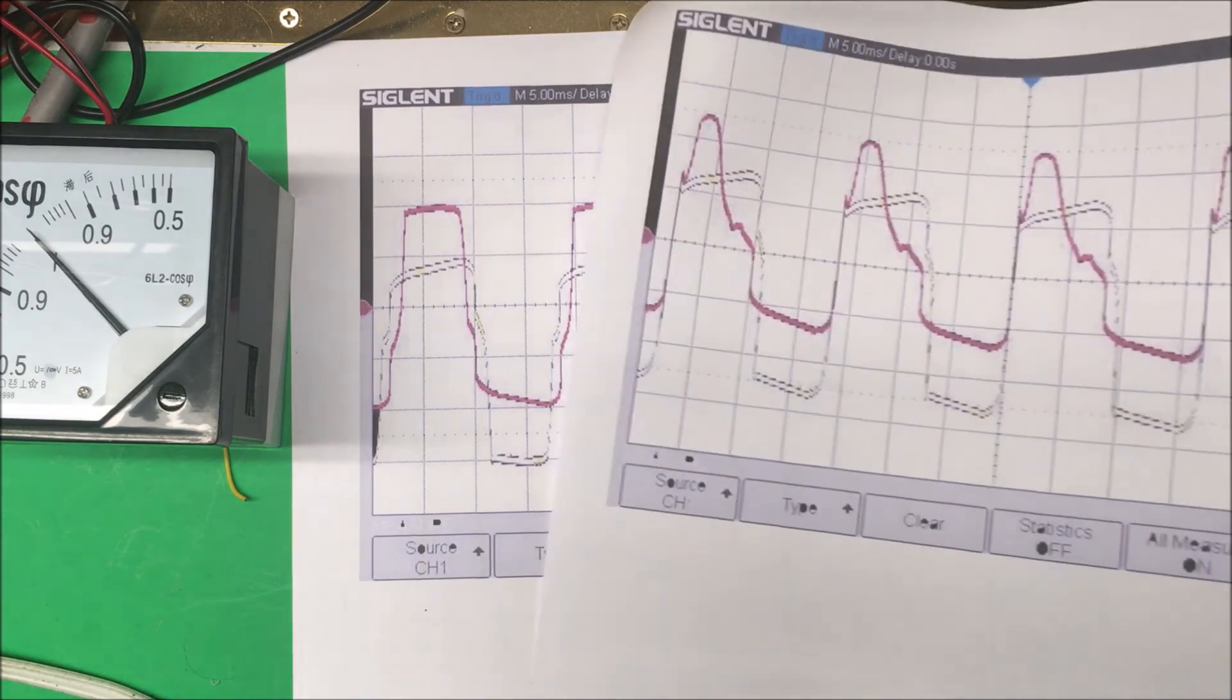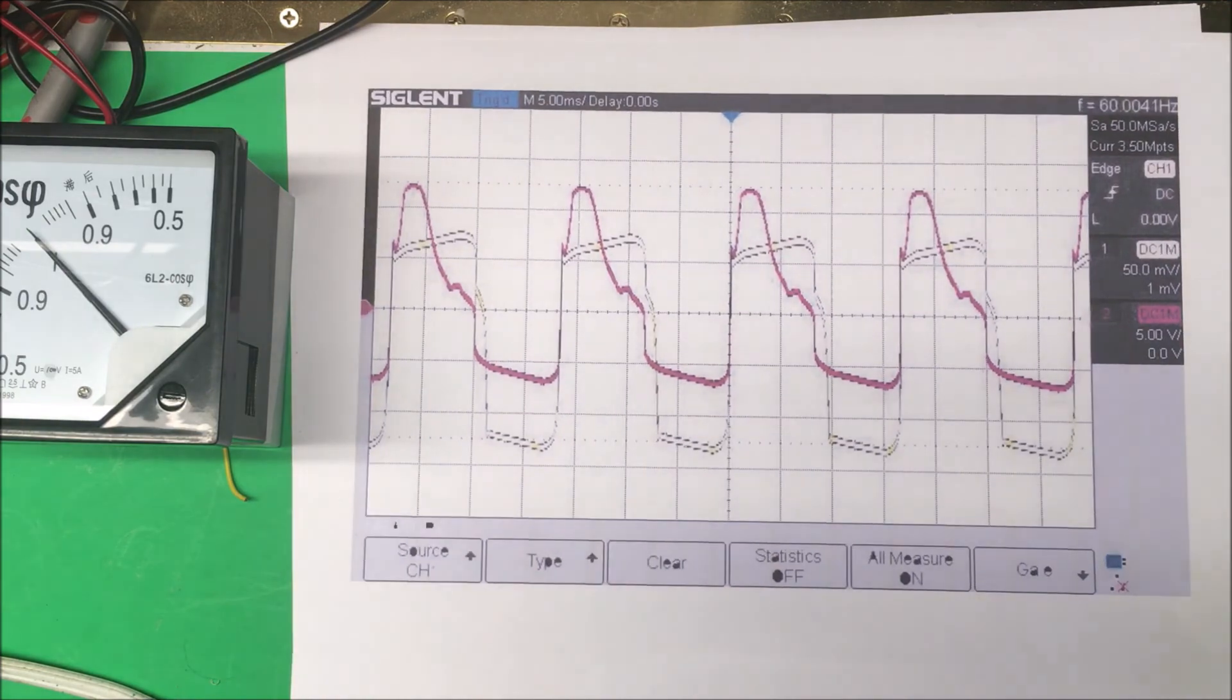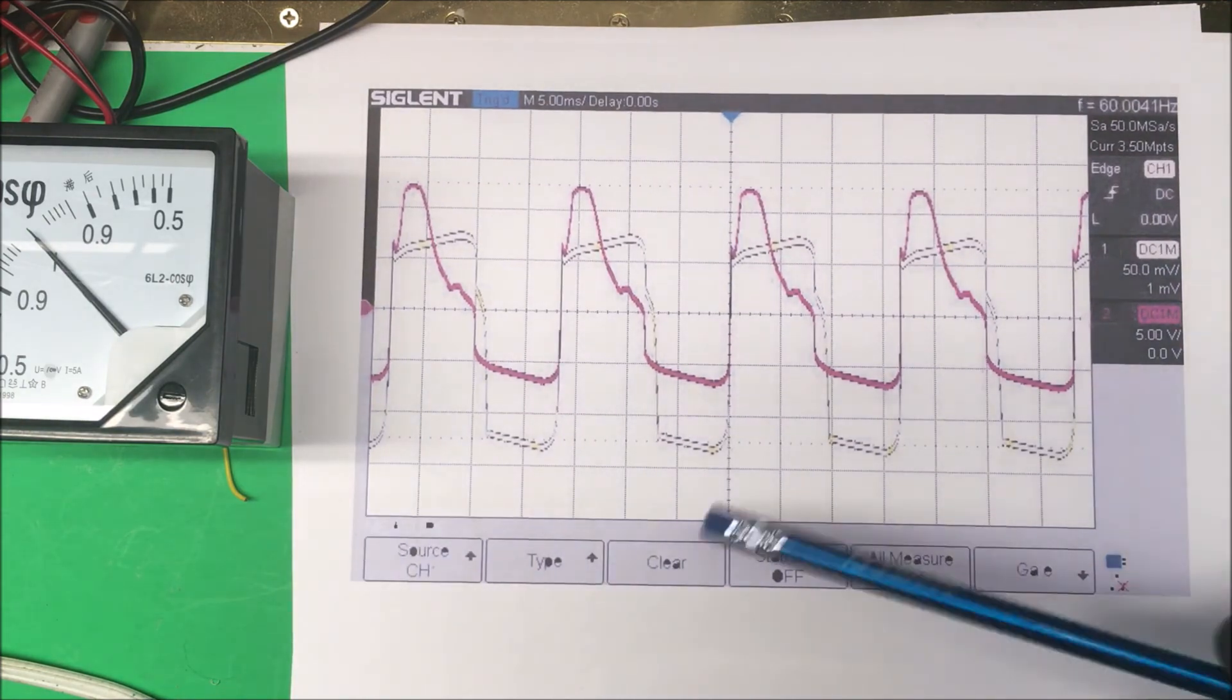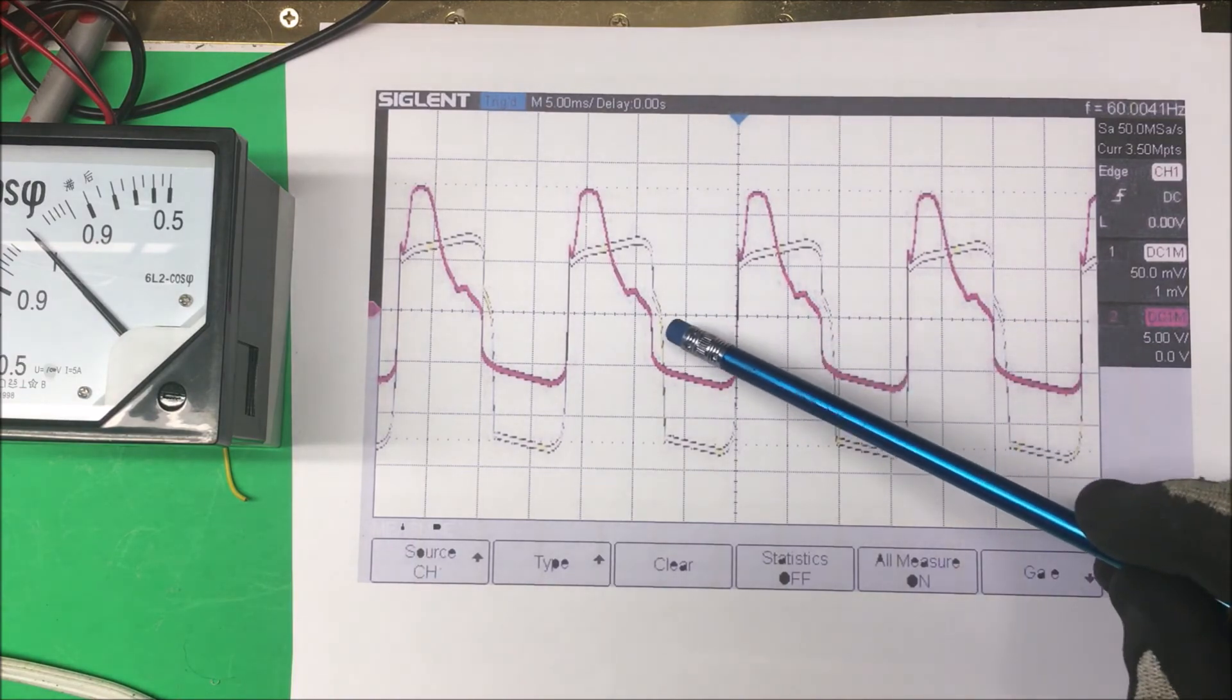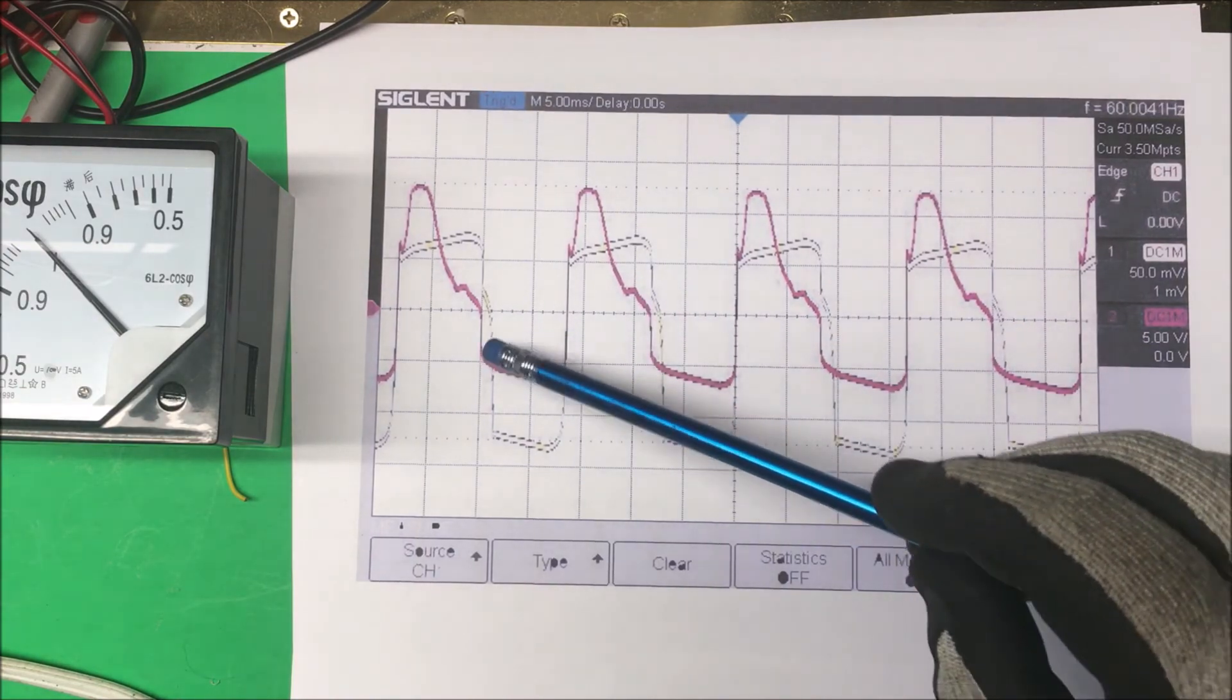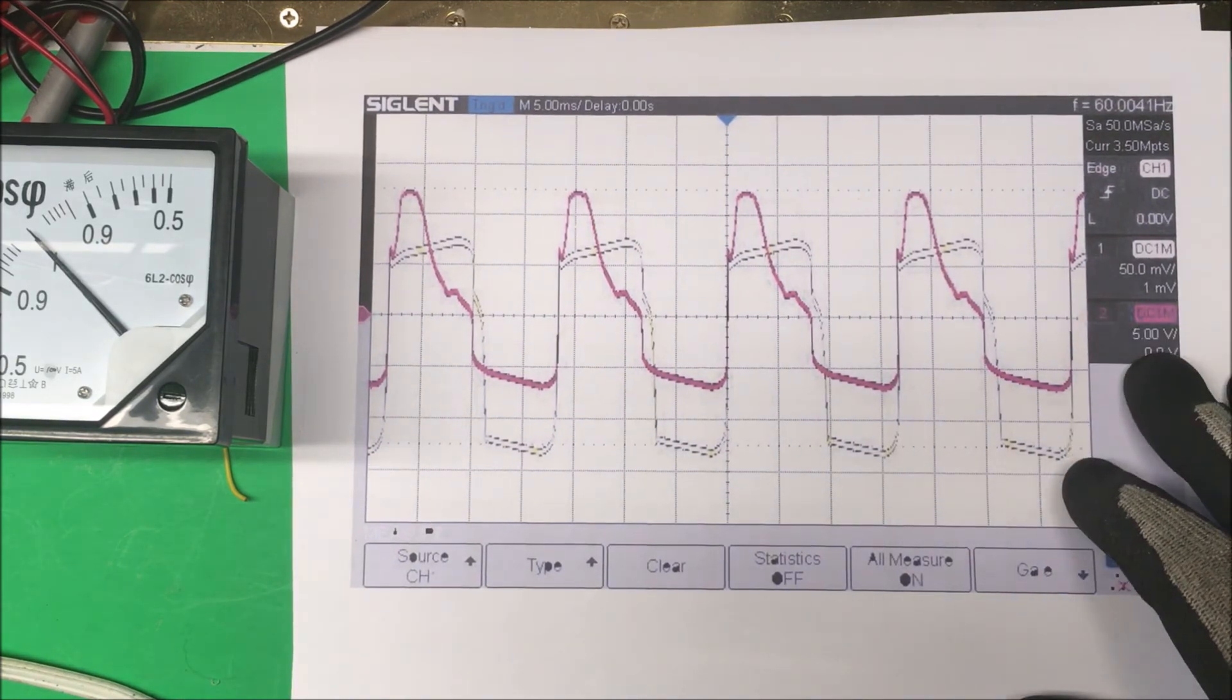But if under an inductive load or a capacitive load, then we do get some phase shift here. This has shifted over a little bit, so we get the difference between these two phases here and that's the voltage we get out on the meter there.